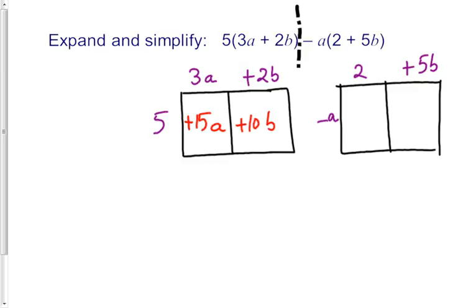We'll do the same thing with the second. Signs negative, numbers 2, and letters a. Sign positive and negative is negative, numbers 5 and letters ab. Now I have got 15a plus 10b take away 2a take away 5ab.